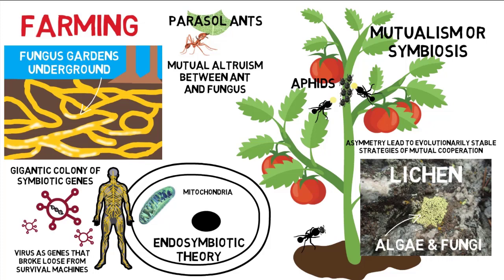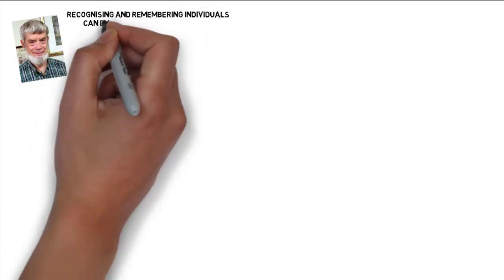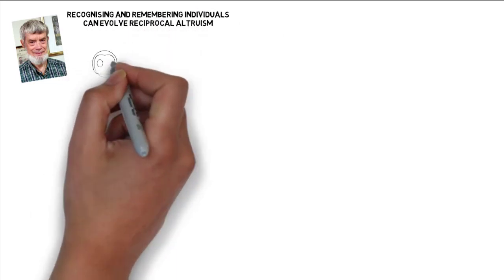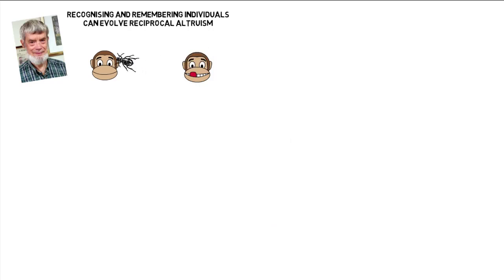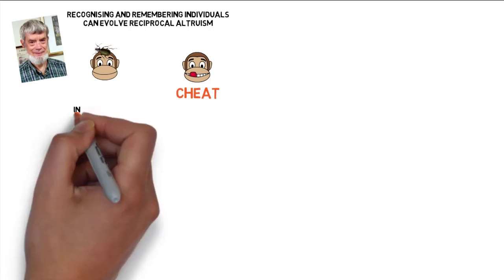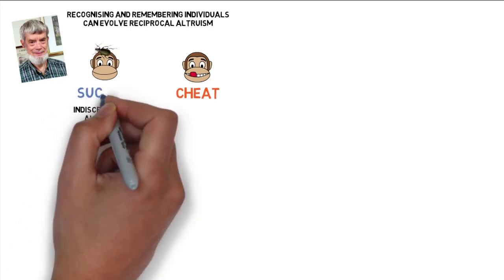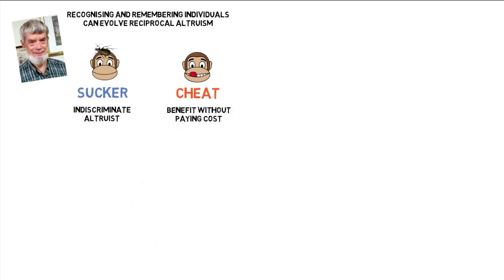George C. Williams concludes that species capable of recognizing and remembering each other as individuals can involve reciprocal altruism. For example, if B has a parasite on his head, A can remove it; when A has a parasite, A may seek B to return the favor — but B may simply refuse and walk off. B is a cheat who benefits from another's altruism and does better than indiscriminate altruists, the suckers, because cheats benefit without paying the cost of grooming anybody else.